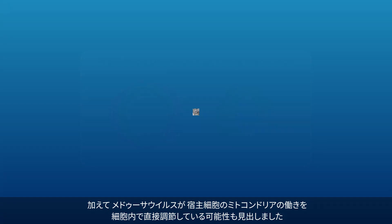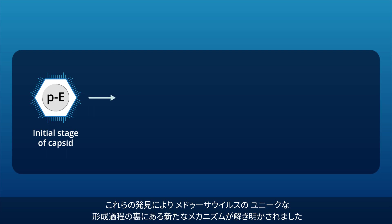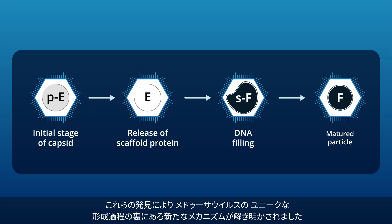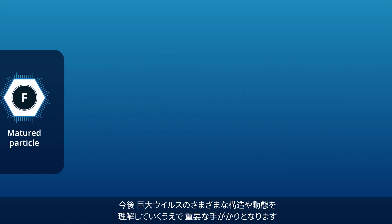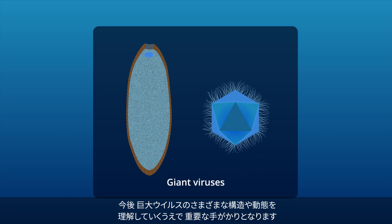Additionally, they suggested that the Medusa virus likely regulates the host cell's mitochondrial activity from directly within the cell. These findings highlight the novel mechanisms underlying the unique maturation process of Medusa viruses, opening doors to a better understanding of the structural and behavioral diversity of giant viruses.